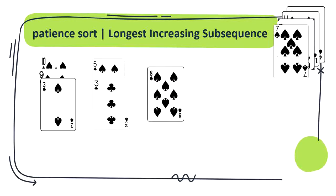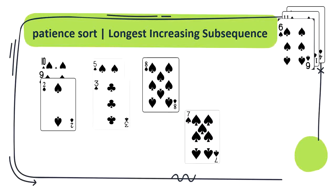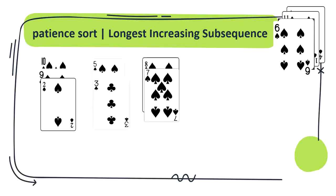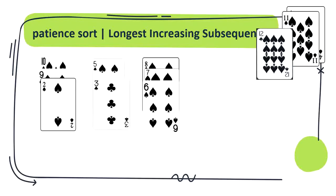Next card is 8, we cannot place it both on top of 2 and 3, so create a new pile. Next is 7, place it on 8. Next is 6, place it on 7. Next card is 12 of spades where we cannot place it on any of the pile we created, so create a new pile.